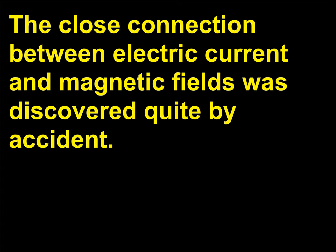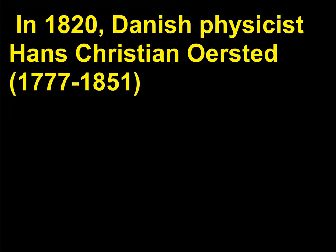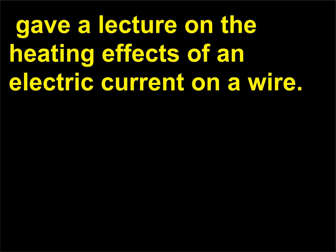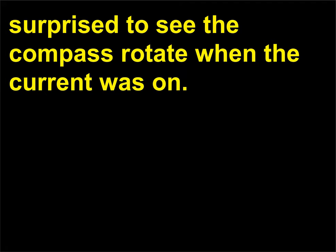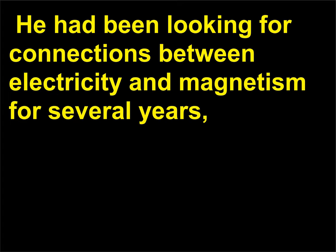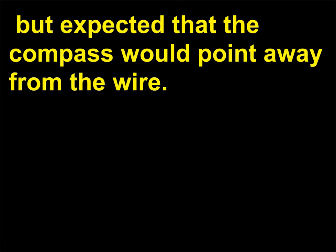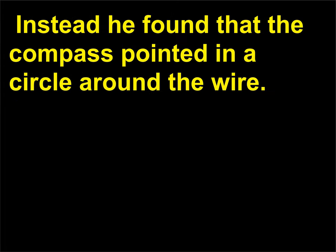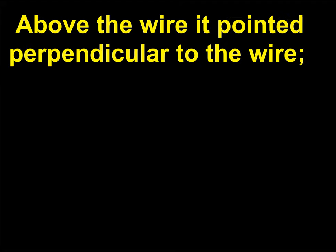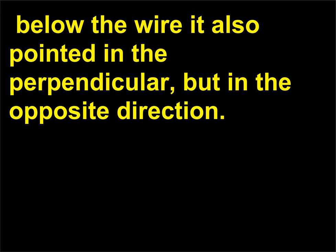How was the connection between electricity and magnetism discovered? The close connection between electric current and magnetic fields was discovered quite by accident. In 1820, Danish physicist Hans Christian Ørsted (1777–1851) gave a lecture on the heating effects of an electric current on a wire. A compass happened to be near the wire, and he was surprised to see the compass rotate when the current was on. He had been looking for connections between electricity and magnetism for several years, but expected that the compass would point away from the wire. Instead he found that the compass pointed in a circle around the wire — above the wire it pointed perpendicular to it, and below the wire it also pointed perpendicular but in the opposite direction.